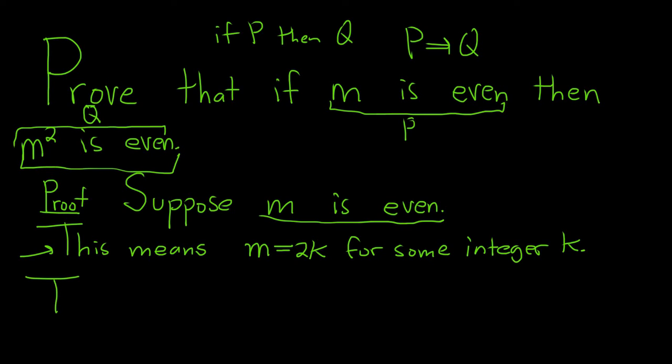So now we write down M squared. Well we just square both sides. M is equal to 2K. So it's 2K squared. And you can just square each piece. So you end up with 4K squared.